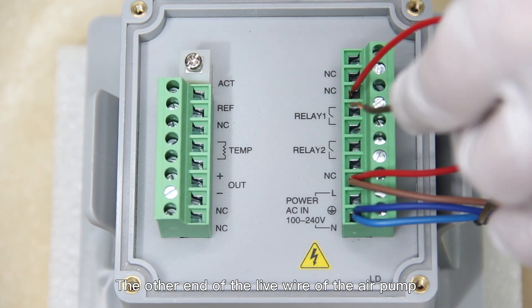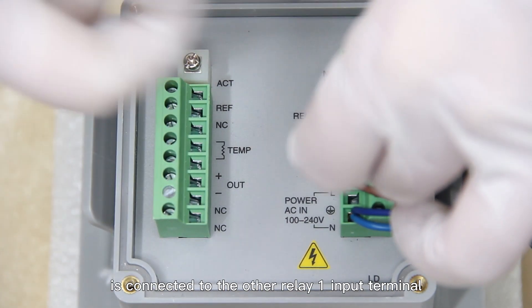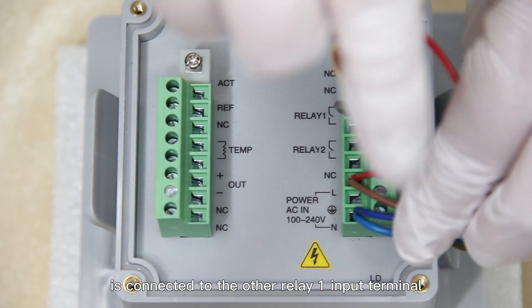Connect the other end of the spare live wire to the relay-1 terminal input. The other end of the live wire of the air pump is connected to the other relay-1 input terminal.